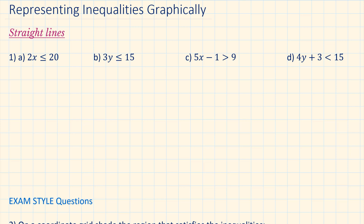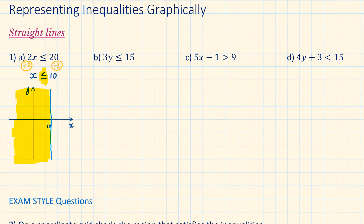Question 1a: 2x is less than or equal to 20. If we divide both sides, we get x is less than or equal to 10. So when we draw the line x equals 10, we can draw a solid line, not a dashed or dotted line. The region shaded in yellow represents everything that is less than or equal to 10.